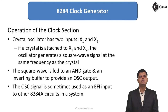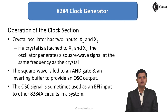The oscillator signal is sometimes used as an EFI input to other 8284 circuits. Basically, whenever two or more 8284 clock generators are required in a system, this oscillator signal is provided to the clock or EFI pin of the other 8284.